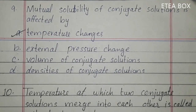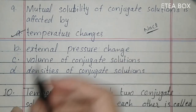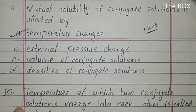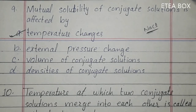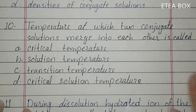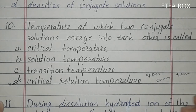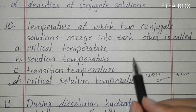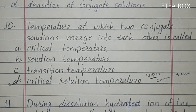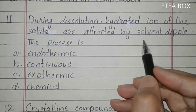Ninth MCQ: mutual solubility of conjugate solution is affected by temperature only. Option A is correct — solubility is affected by temperature changes. NaCl is just an exception not affected by temperature. Tenth MCQ: the temperature above which two conjugate solutions merge into each other is called critical solution temperature, also called upper consolute temperature. Option A is correct.